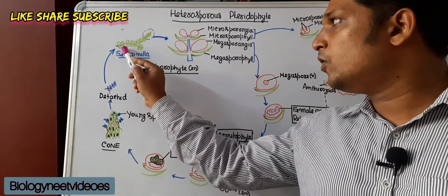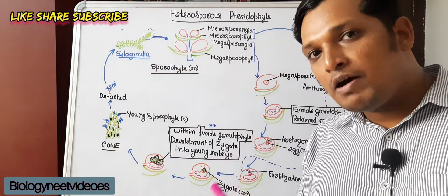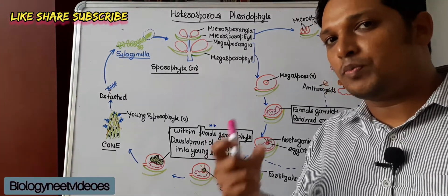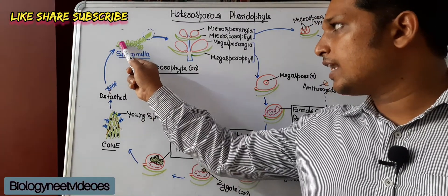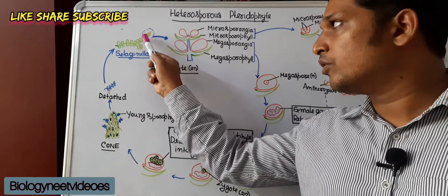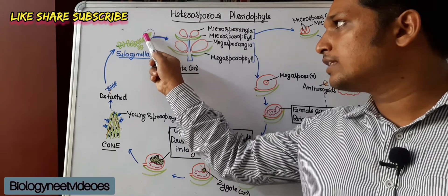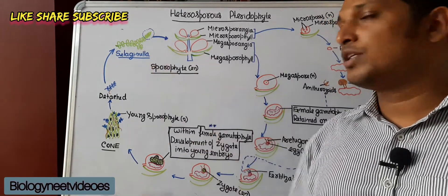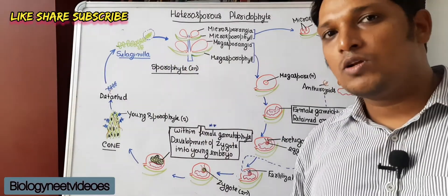This is the sporophyte of Selaginella. Pteridophytes have a sporophyte as their adult body, which is a spore-producing structure. Selaginella has microphylls and a special leaf called a sporophyll. Aggregation of sporophylls in Selaginella leads to the formation of a cone. Hence, Selaginella produces a cone.